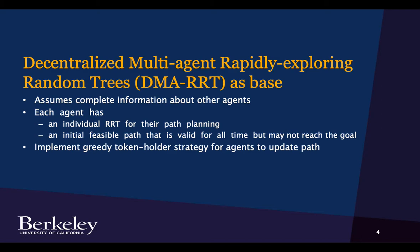And this algorithm is called decentralized multi-agent rapidly exploring random trees. And it does assume complete information about other agents.